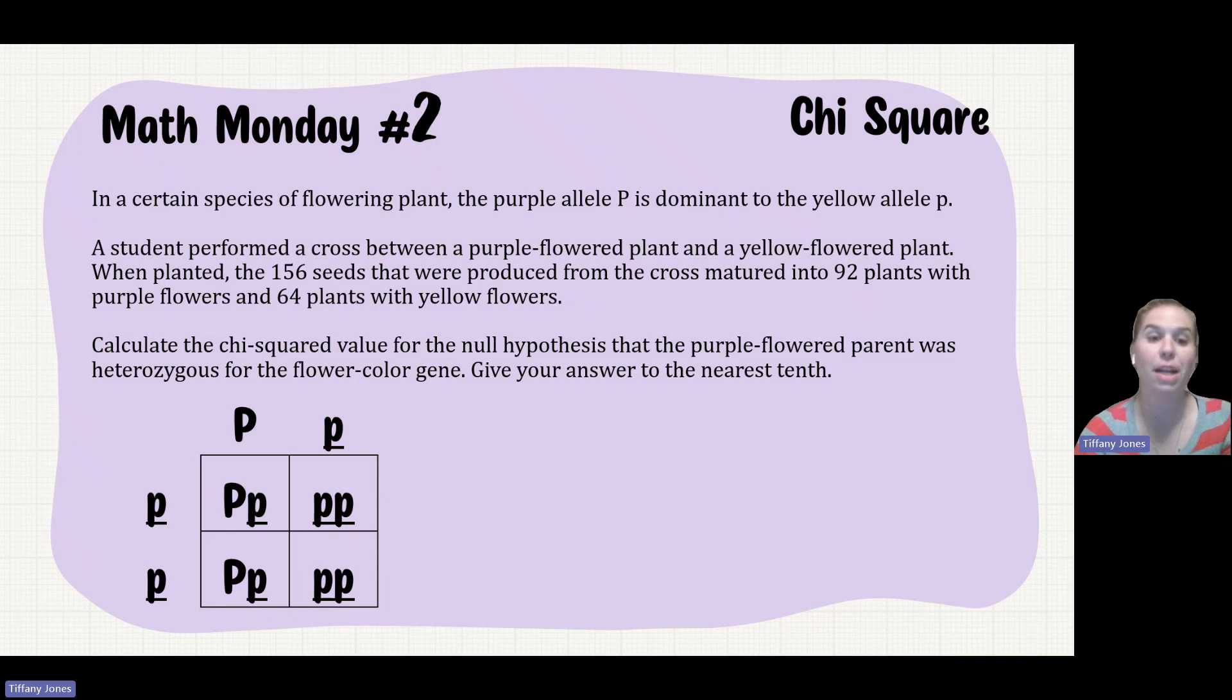So what we're first going to do is our Punnett square. We're going to cross the yellow plant with the purple plant with the purple being heterozygous. That gives us 50% purple and 50% yellow. I have a little underline here that denotes that it's a lowercase letter. I always tell my students that if it's a lowercase letter that looks the same as a capital letter, to put that line underneath it, and that will help to differentiate between a capital and a lowercase letter.